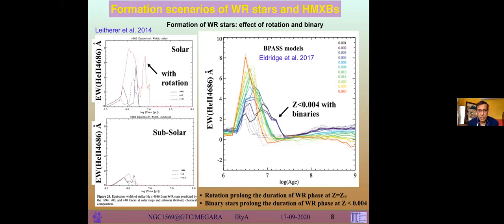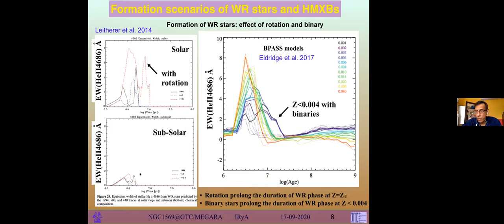The evolutionary models I showed earlier were simple models, not taking into account processes known to happen in massive stars — one of them being rotation. Stars rotate, and especially high-mass stars rotate faster. In this study by Leitherer et al., I'm showing the differences in the evolution of the helium line equivalent width with and without rotation. The red line with rotation at solar metallicity shows some prolongation of the period for which helium can be seen in a star-forming region, whereas at sub-solar metallicity there is no such trend. So rotation cannot explain the helium budget problem.